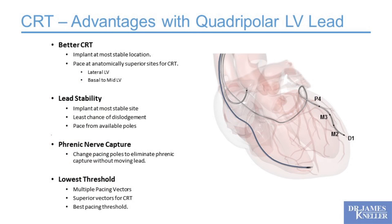A very hot topic in CRT is the quadrupolar left ventricular lead, which has really transformed CRT implant cases. St. Jude had the first quadrupolar pacing lead. The first advantage is better CRT — you can implant your lead in the most stable location, then pace from the poles in anatomically superior sites: the lateral left ventricle from the base up by the mitral valve to the mid-chamber. As you progress towards the apex, you lose the CRT benefit. So lateral, mid-to-base is where you want to pace from. If your most stable implant site is apical, those more proximal poles let you pace at a more advantageous site for heart failure therapy.